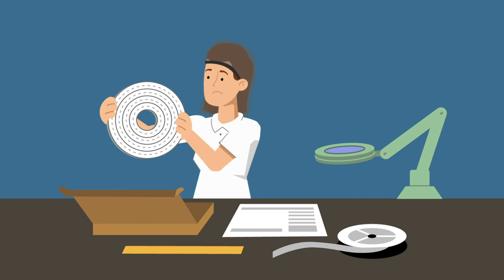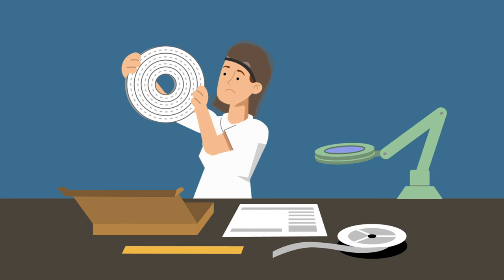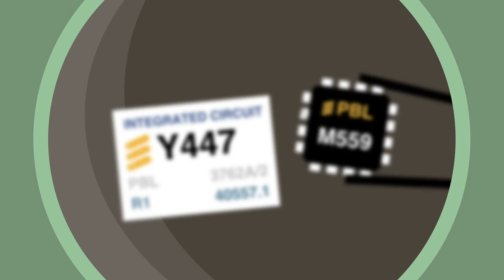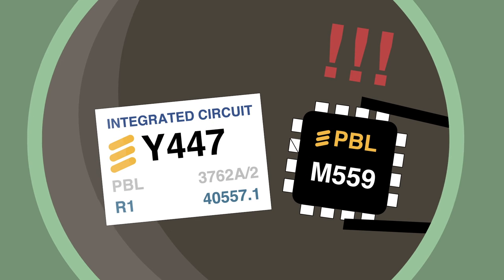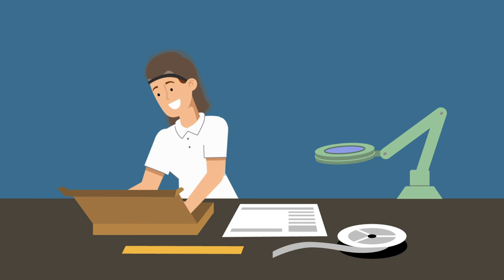We also procure components and verify that each part is within spec. Distributors sometimes send mislabeled components where the value is inconsistent with the part. Sierra catches these types of errors to help prevent delays.